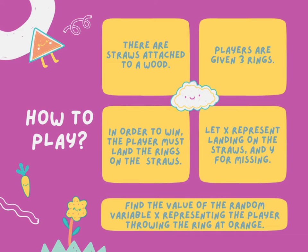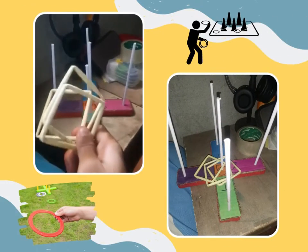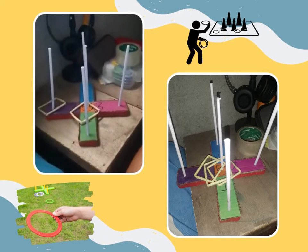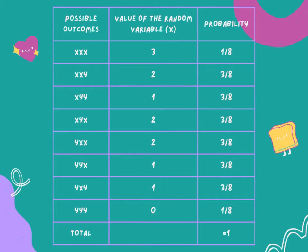This game is ring toss. Here's how you can play it. There are straws attached to a wood. Players are given 3 rings; in order to win, the player must land the rings on the straws. Let X represent landing on the straws and M for missing. Find the value of the random variable X representing the player throwing the ring at orange. Here we can see the possible outcomes, and we will now go to the probability histogram.